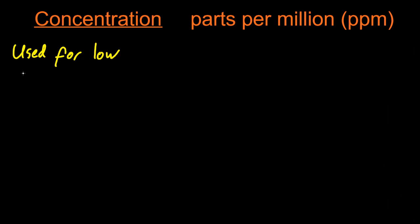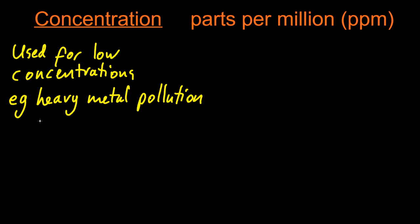So parts per million, what's it used for? Well, it's used for low concentrations. For example, heavy metal pollution in water, or some low concentrated chemicals in blood.